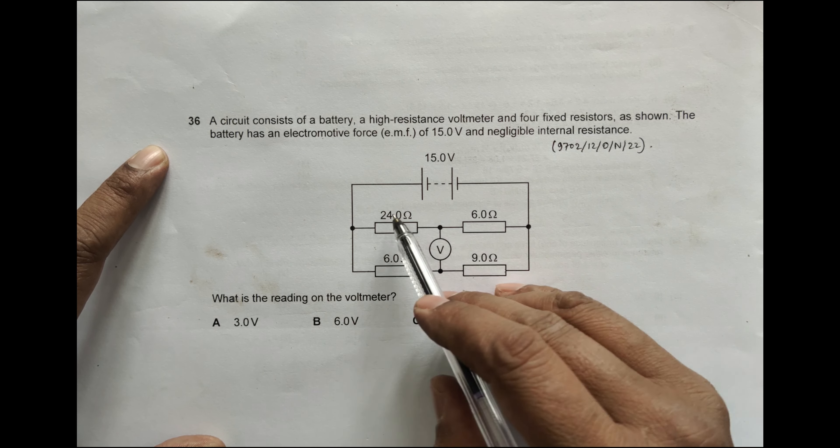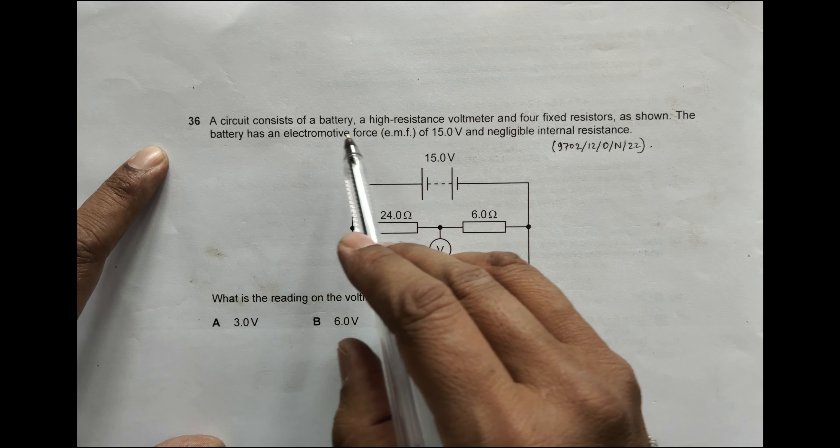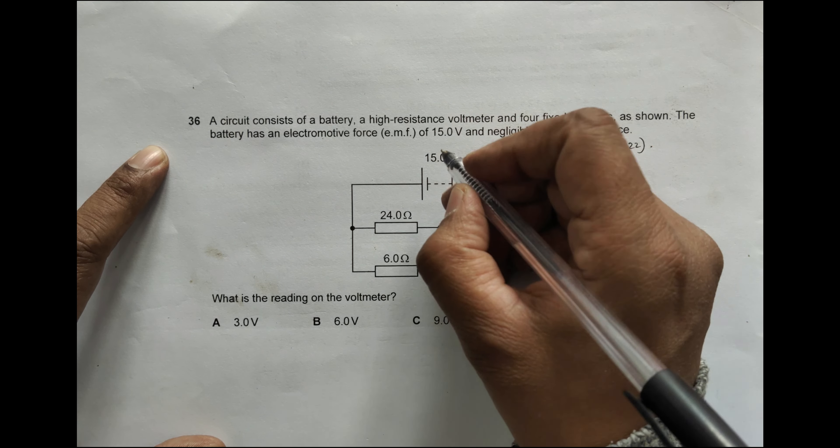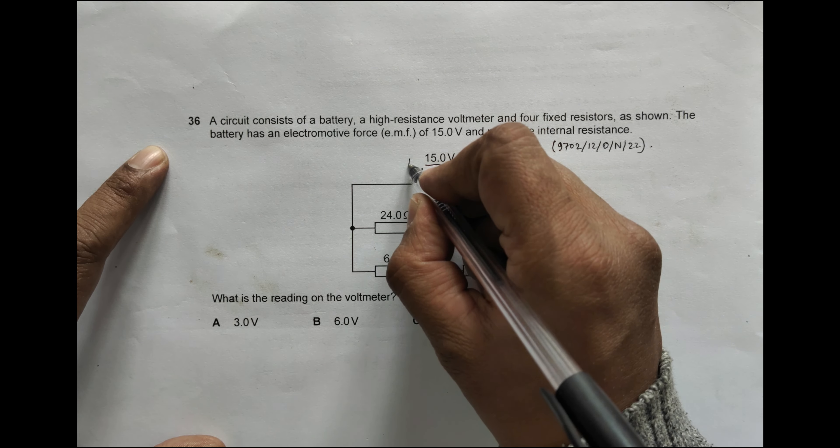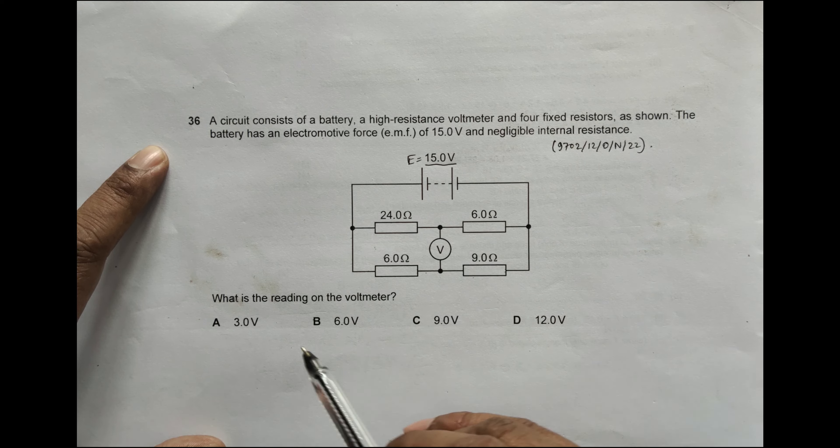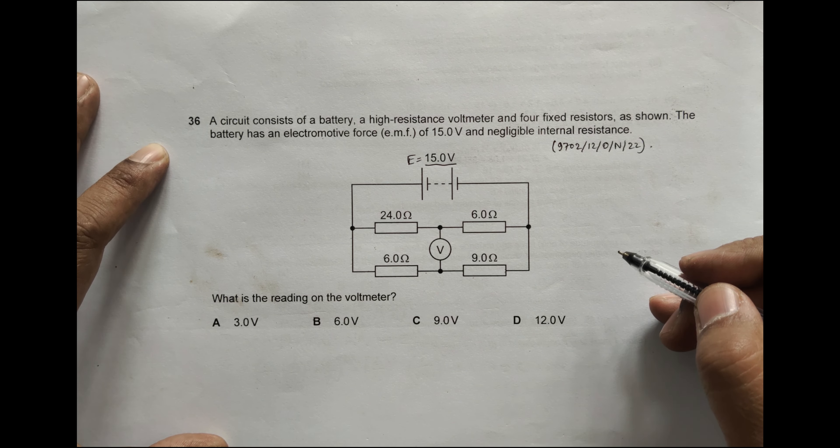It says that a circuit consists of a battery, a high-resistance voltmeter, and four fixed resistors as shown. The battery has an electromotive force of 15.0 volts with negligible internal resistance, so E is equal to V and things become easier. What is the reading on the voltmeter?